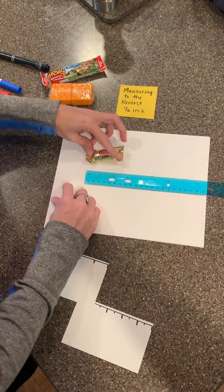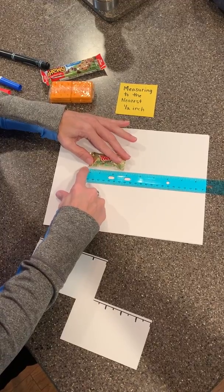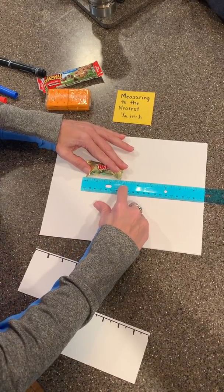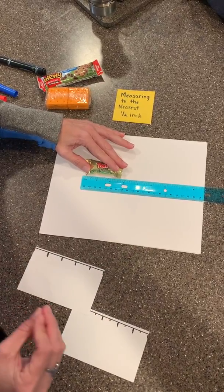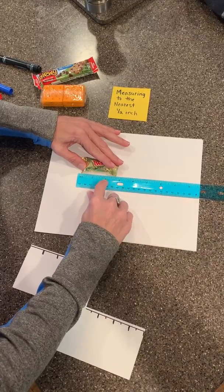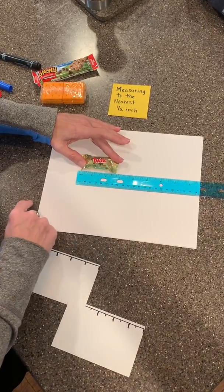So I'm going to put my candy down, and I'm going to make sure it starts there. And you can see that it's between two inches and three inches. But remember in second grade, you just went to the nearest whole inch. So I can see that it's closer to three than it is to two, so I would say that this is three inches.